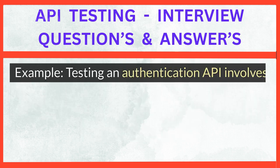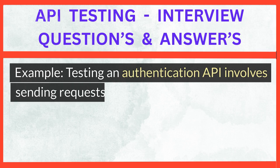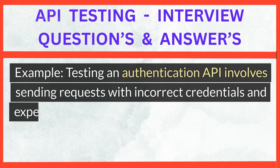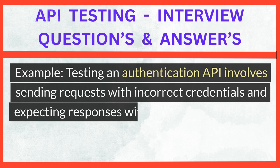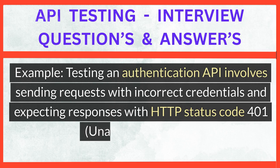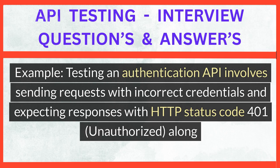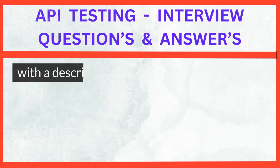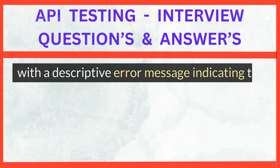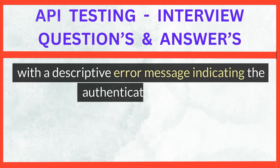For example, testing an authentication API involves sending requests with incorrect credentials and expecting responses with HTTP status code 401 (Unauthorized), along with a descriptive error message indicating the authentication failure.